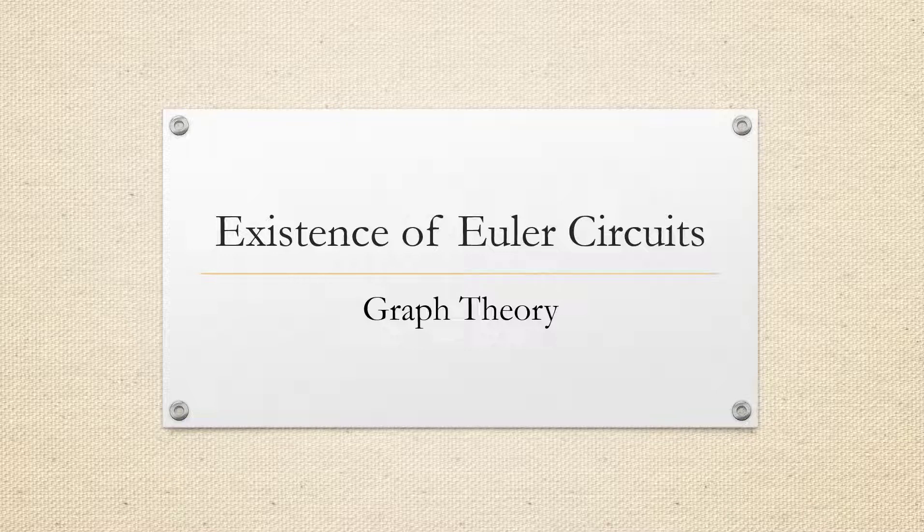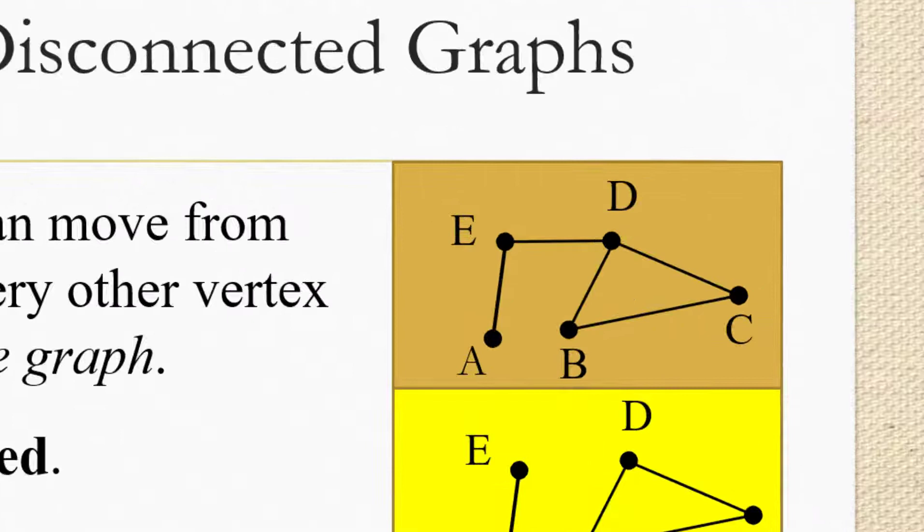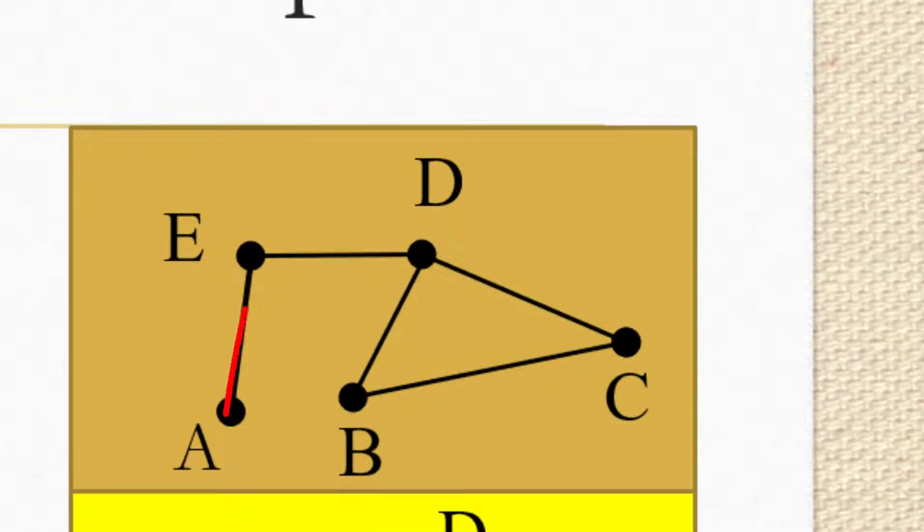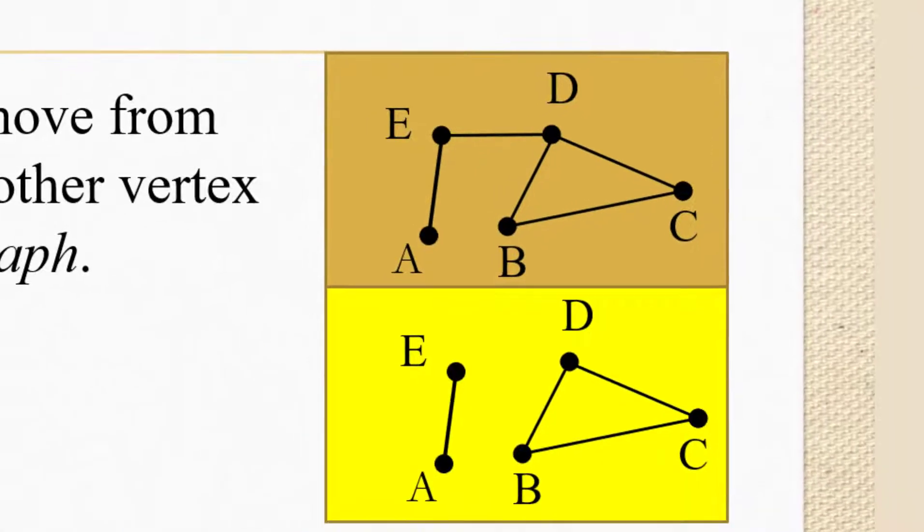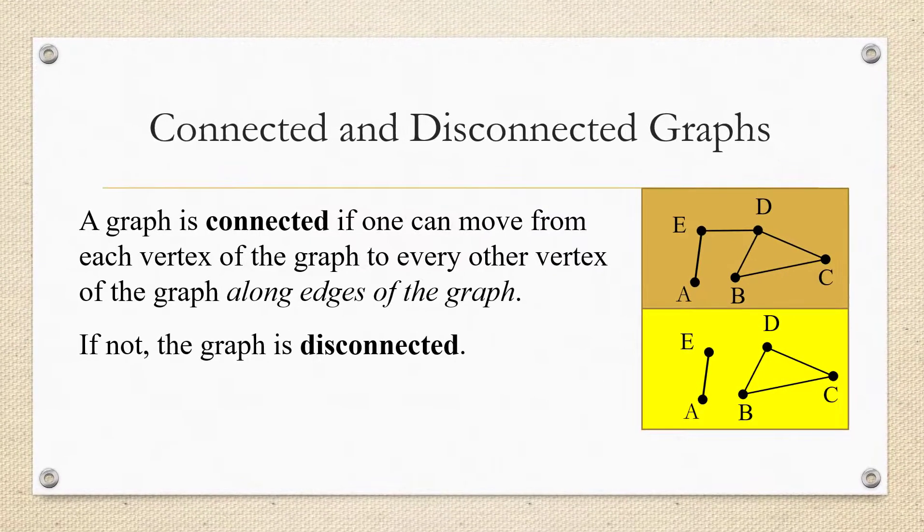So before we start talking about how to determine if an Euler circuit exists, I just want to mention that all of the graphs we're going to be considering in this video are connected graphs. So a connected graph is one where we can move from each vertex of the graph to every other vertex along edges of the graph. There's no piece of the graph that's separate. If there is, like in the yellow graph, then we call that a disconnected graph. We're going to talk about connected and disconnected graphs in another video in more detail, but for this video, I just want you to realize that the only graphs we're talking about are the connected ones.